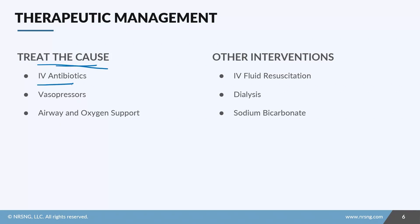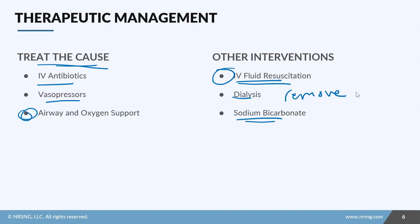When it comes to lactic acidosis, our top priority is to treat the cause. This might mean giving IV antibiotics for sepsis, vasopressors in a shock state, or ensuring airway, breathing, and oxygen support so the body can stop relying on anaerobic metabolism. Other common interventions include IV fluid resuscitation, dialysis, and sodium bicarbonate. Fluid resuscitation improves tissue perfusion and helps dilute acid in the blood. Dialysis removes excess lactic acid, especially if renal failure is involved. Sodium bicarb can be controversial in lactic acidosis — in certain patients it can actually worsen acidosis — so it's always used in conjunction with other therapies.